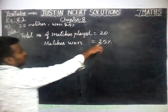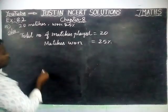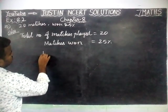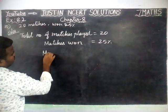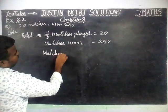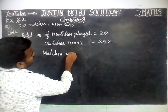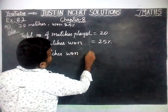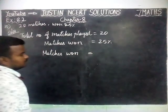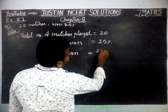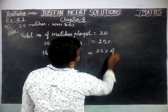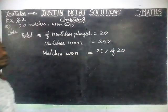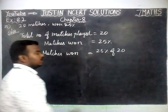We know only the percentage. Now we are going to find the matches won. Matches won is equal to 25% of 20 matches.